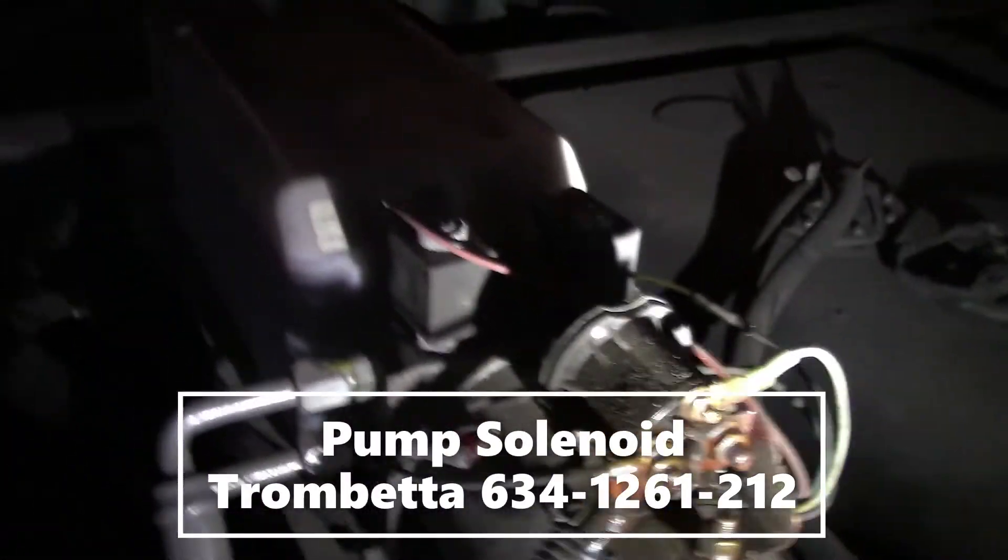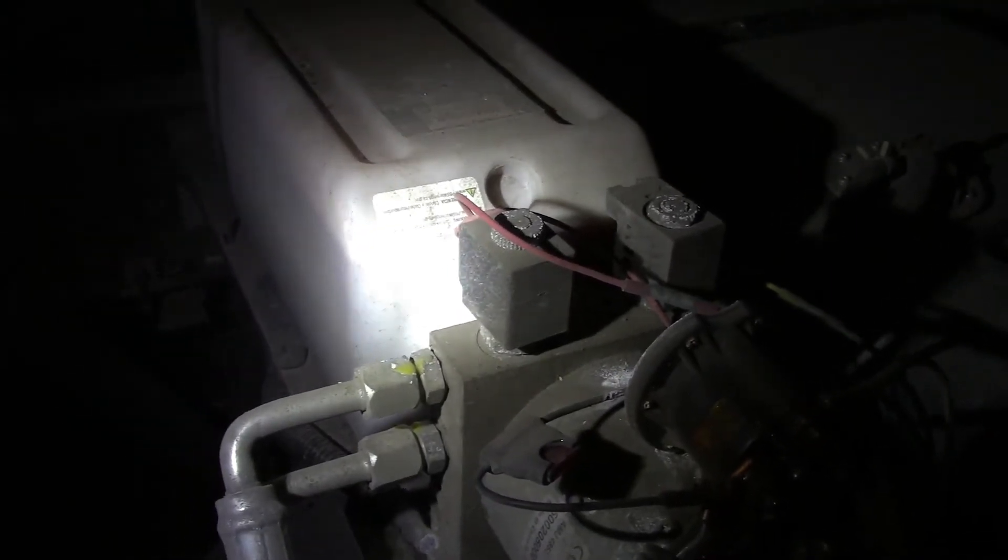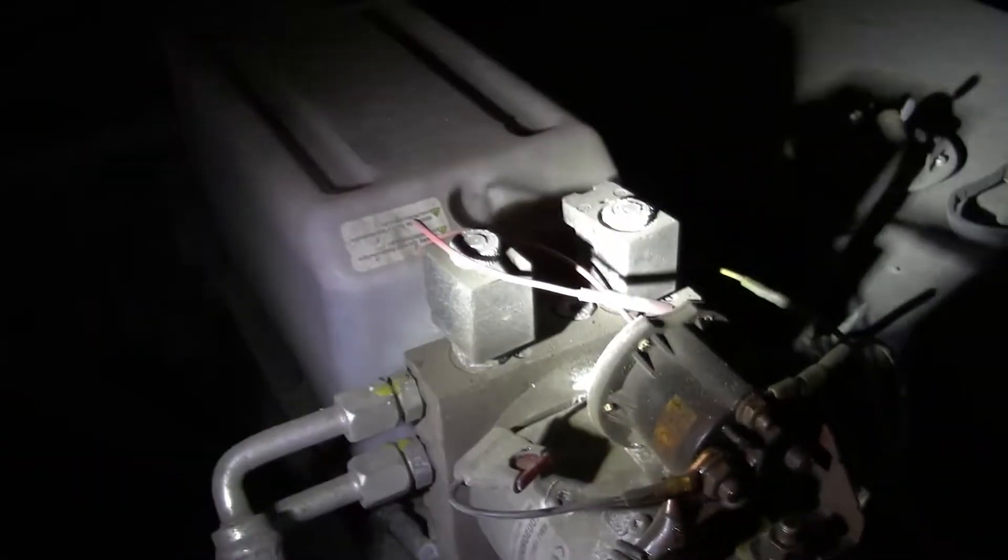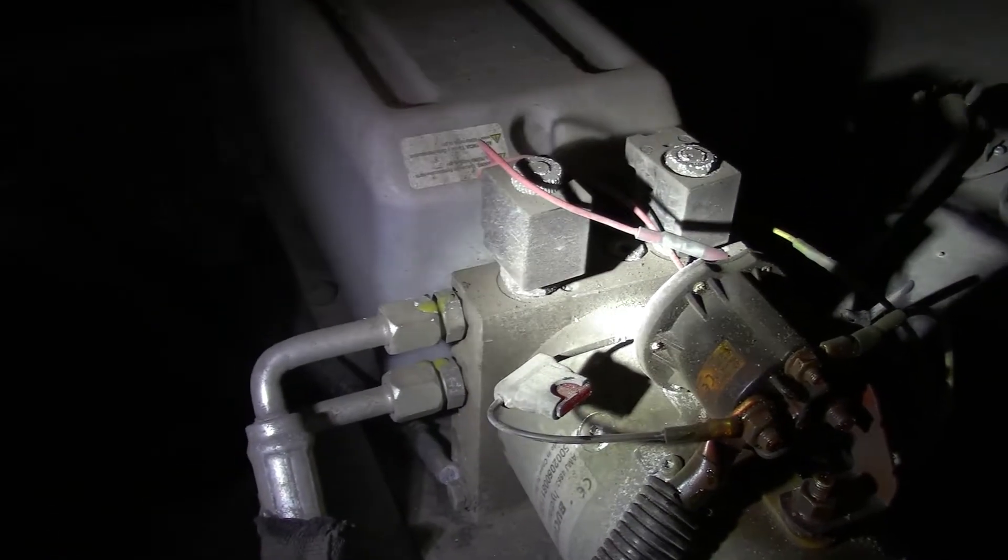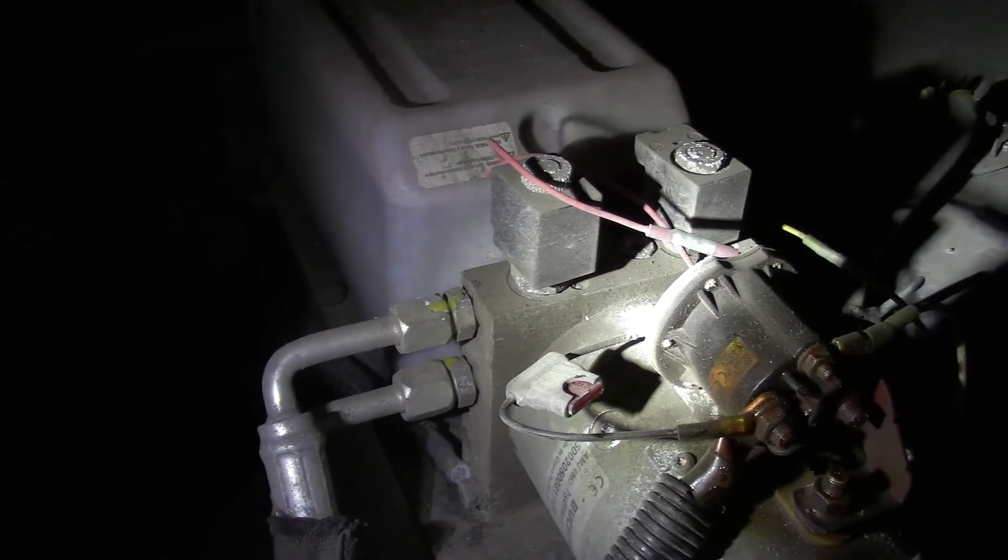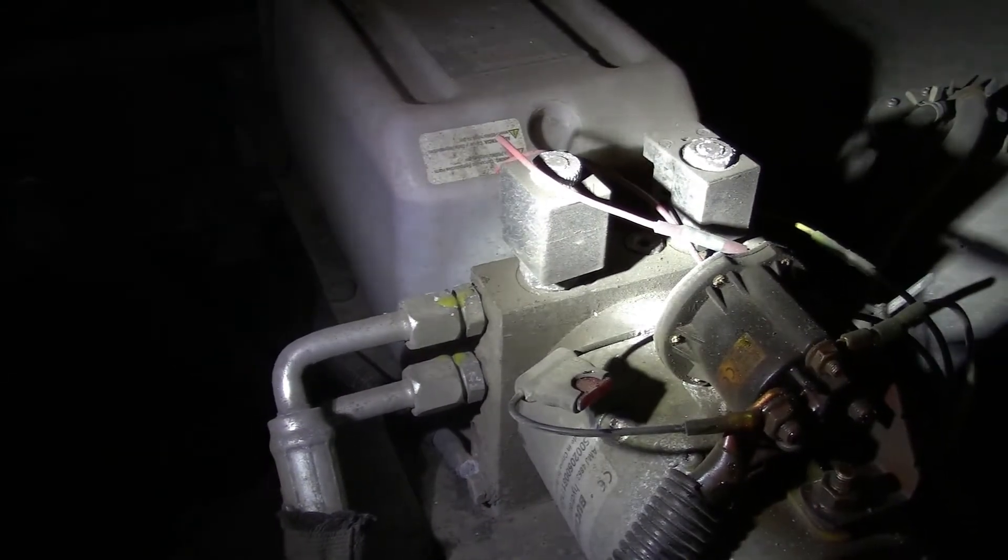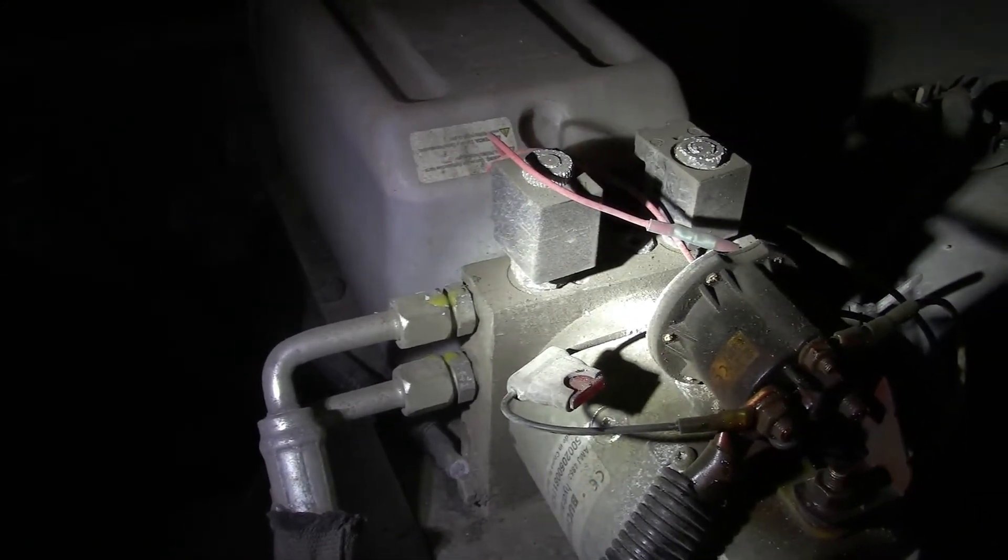And then the next thing electrically that you would look at if you had a problem: you've got these two solenoids here that work cartridge valves in the pump body. The other failure we had was actually one of those coils - I'll show you that in a minute. One of those controls the up motion and the other one controls the down motion.